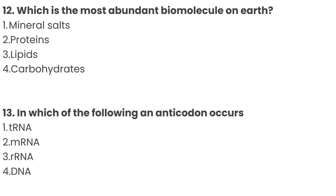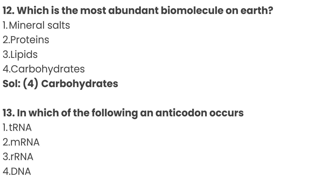Question number 12: which is the most abundant biomolecule on earth? Option 1: Mineral salts, Option 2: Proteins, Option 3: Lipids, Option 4: Carbohydrates. The correct answer is Option 4: Carbohydrates is the most abundant biomolecule on earth.